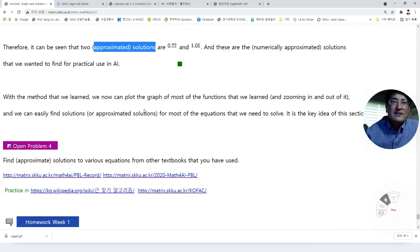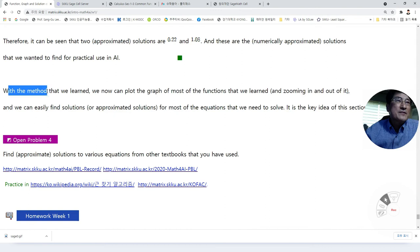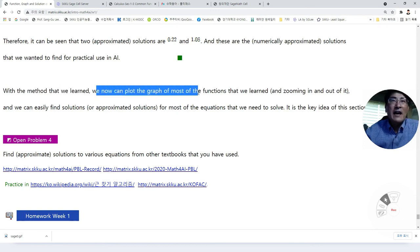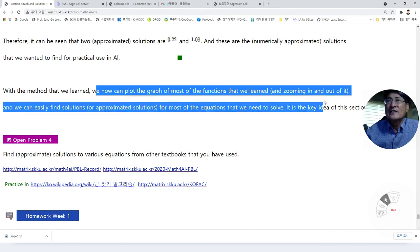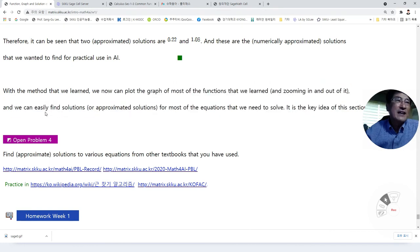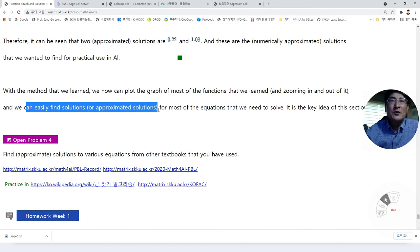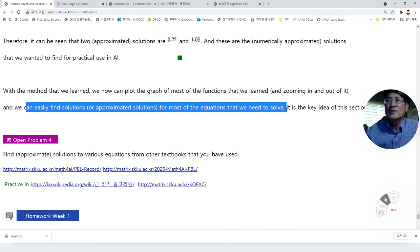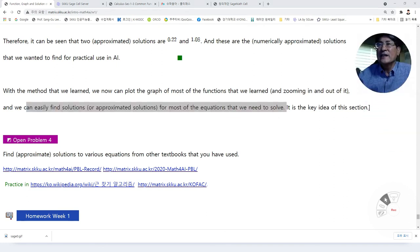So these ideas lead us to build up this find root code that gives us the approximated solutions. With this method, we now can plot a graph of most of the function that we learned and zooming in and out of it. And then we can easily find the approximated solutions for most of the equations that we need to solve. It is kind of the key idea of this section.